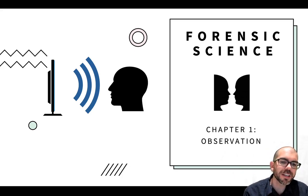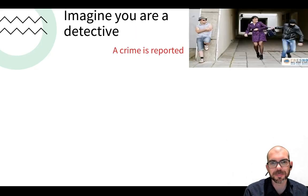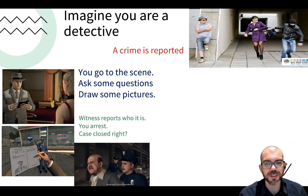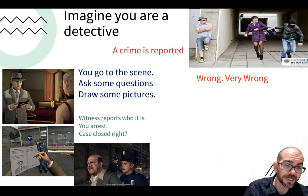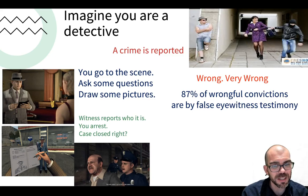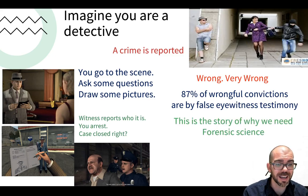This lecture is a summary of everything in chapter one on observation. Imagine you're a detective — there's a crime that's reported. You can see a burglary in broad daylight, so you go to the scene, ask some questions, draw some pictures, get witness reports on who it was, arrest someone, case closed. Right? Well, wrong — very wrong. 87% of wrongful convictions — convicting people who are innocent as guilty — are because of false eyewitness testimony.